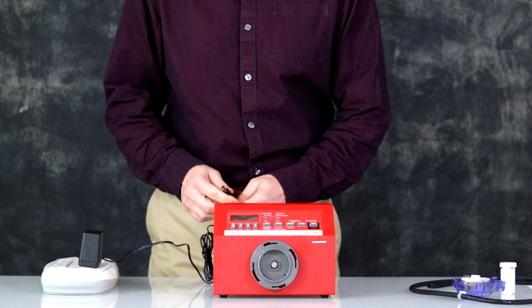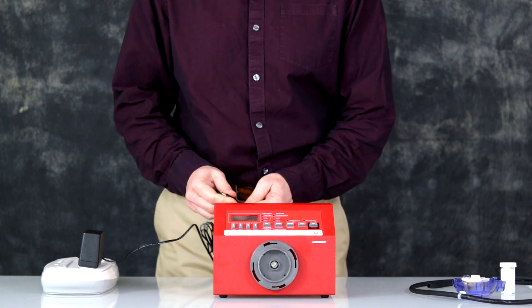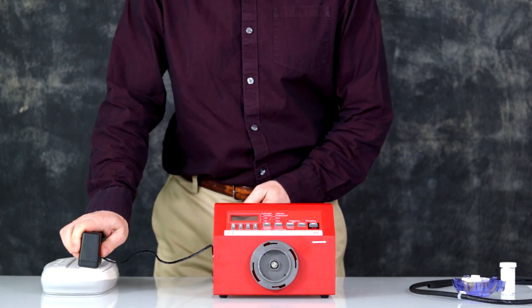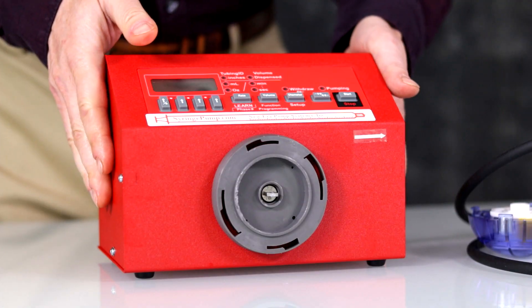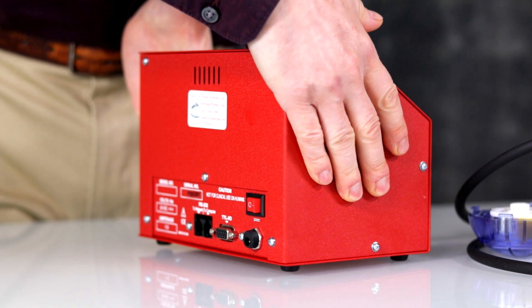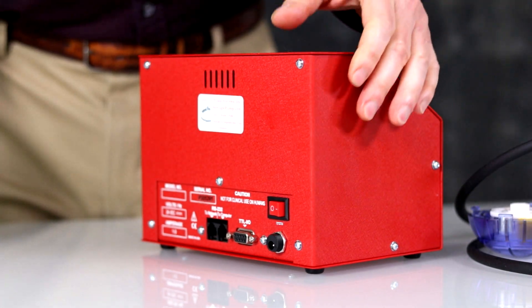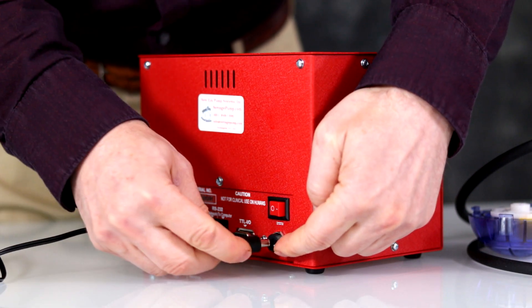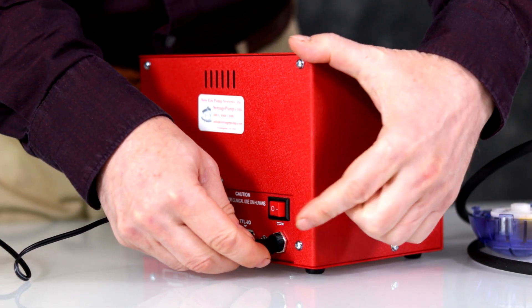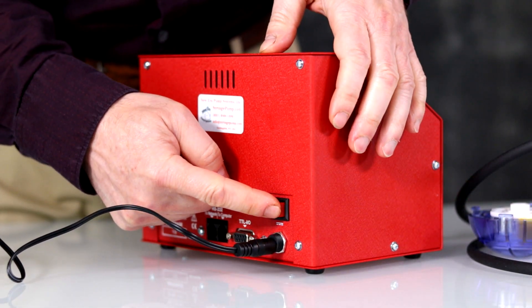Begin by plugging your power supply to the wall power or a power strip. If you're using a power strip, make sure the power strip is turned on. Plug your power supply into the back of the pump, round connector and then turn on the pump by pressing the switch.